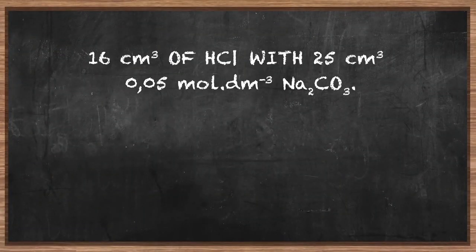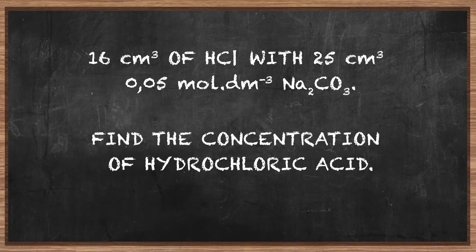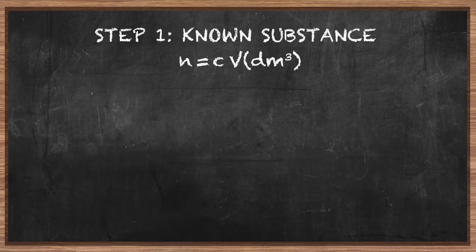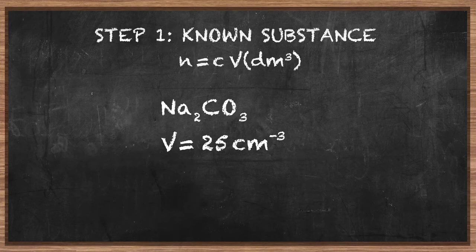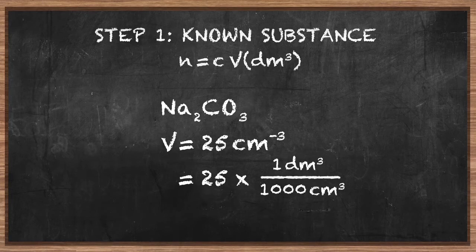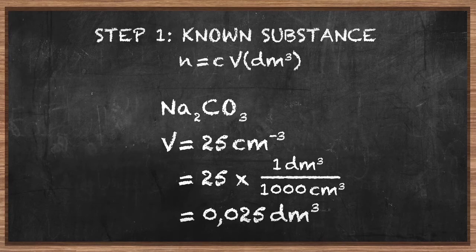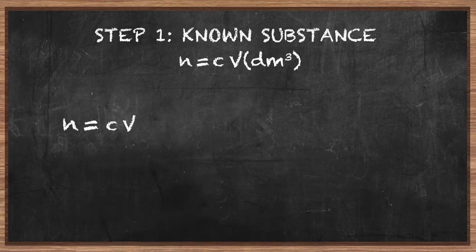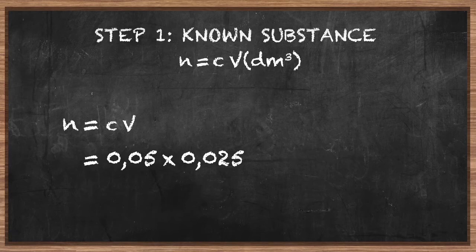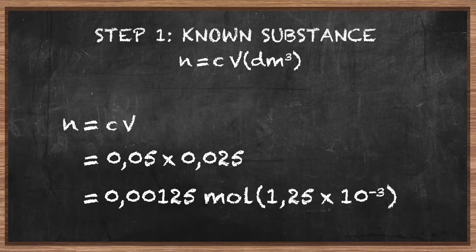16 cm³ of HCl reacted with 25 cm³ of 0.05 mol per decimetre cubed of Na₂CO₃. Let's find the concentration of hydrochloric acid. Let's calculate the number of moles of sodium carbonate: 25 cm³ of sodium carbonate solution reacted with the hydrochloric acid. 25 cm³ represents 25 divided by 1000, giving 0.025 decimetres cubed. The number of moles of sodium carbonate equals its concentration times its volume: 0.05 × 0.025 = 0.00125 mol, or 1.25 × 10⁻³ mol.